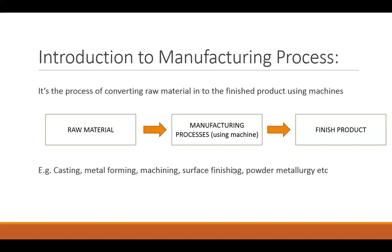The different examples of Manufacturing Processes are Casting, Metal Forming Process, Machining Process, Surface Finishing Process, and Powder Metallurgy Process.